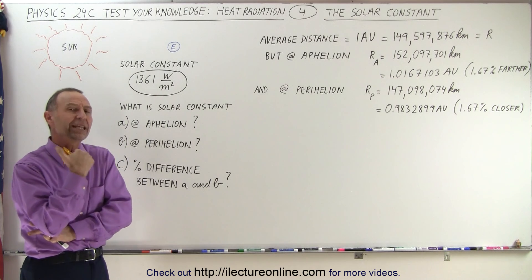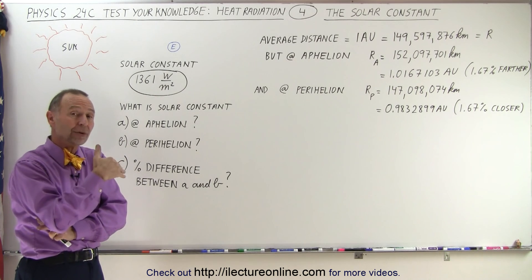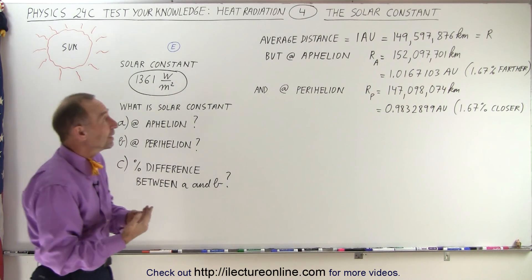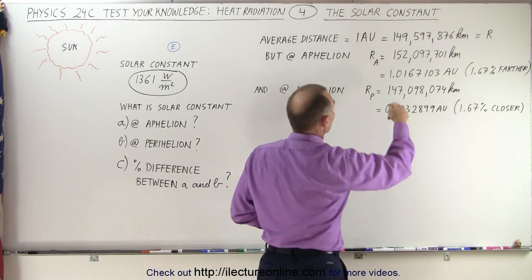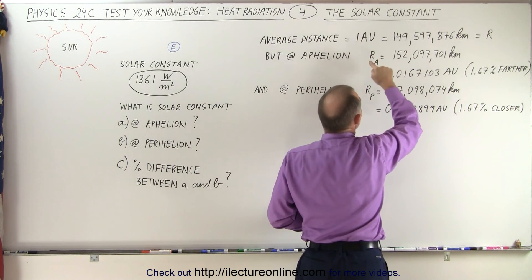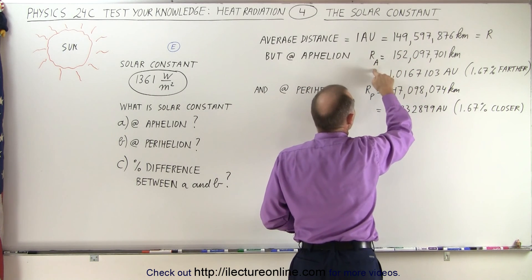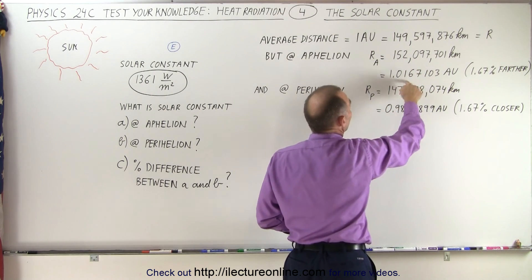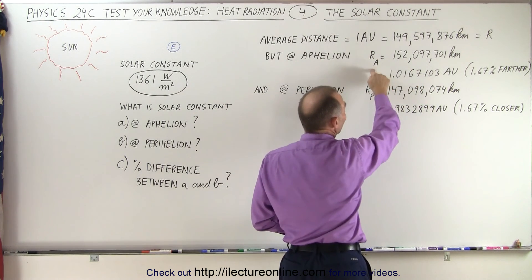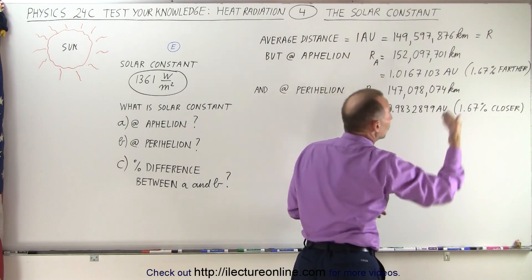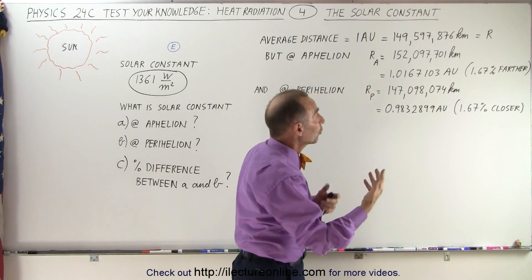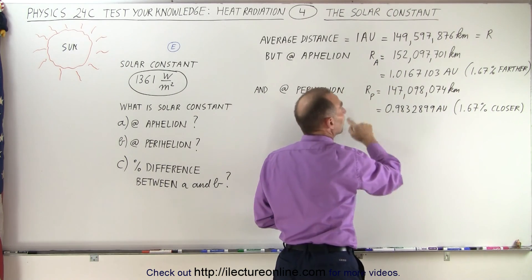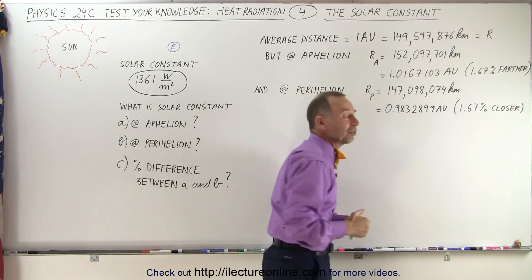So what is the difference in the energy received in summer versus winter from the sun? For that, we need to know the average distance between the earth and the sun, the distance at aphelion, and the distance at perihelion, expressed in astronomical units. At aphelion we are farther away — about 1.67% farther. At perihelion we are about 1.67% closer.